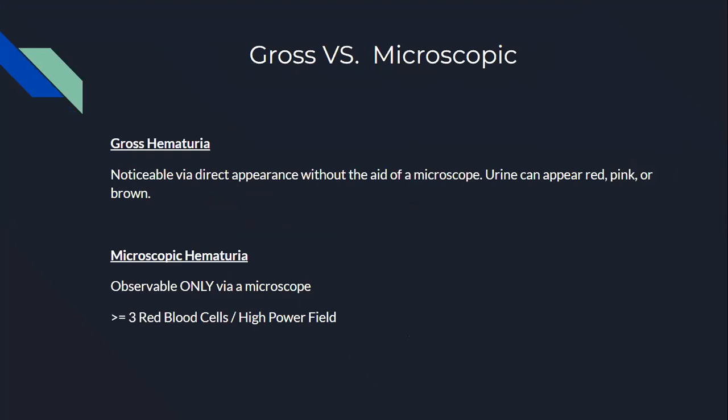Before we get into it, we need to know the difference between gross and microscopic hematuria. Gross is when you can see it with the naked eye — you don't need a microscope. Urine can appear red, pink, or brown. Microscopic hematuria looks like normal urine to the naked eye, but when you put it under a microscope, you'll see red blood cells. To be defined as microscopic hematuria, there has to be three or more red blood cells per high power field.